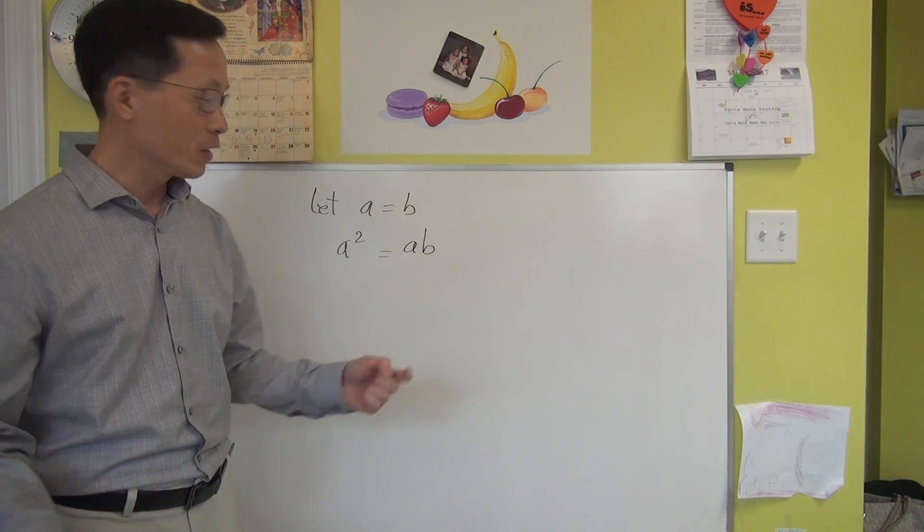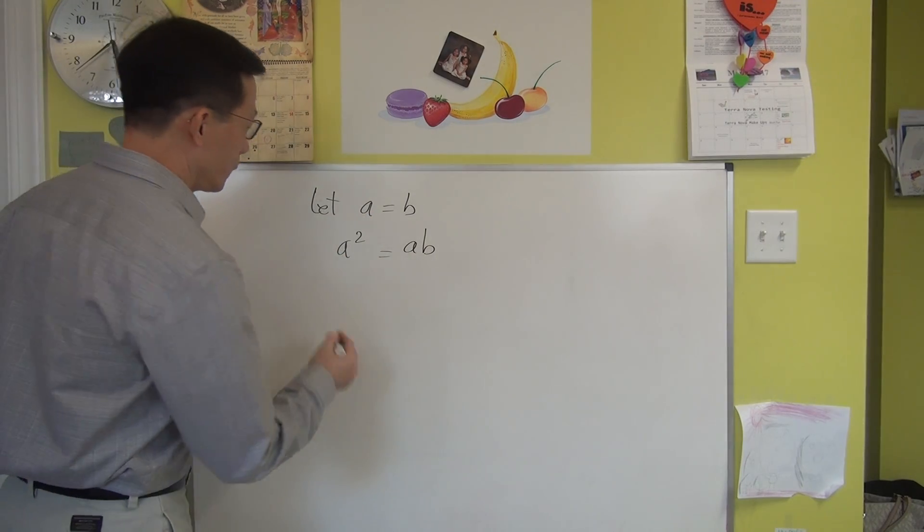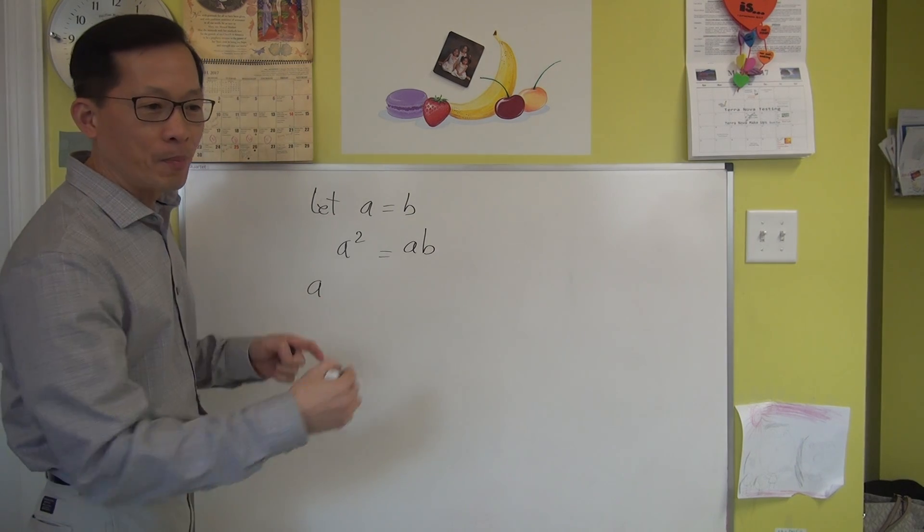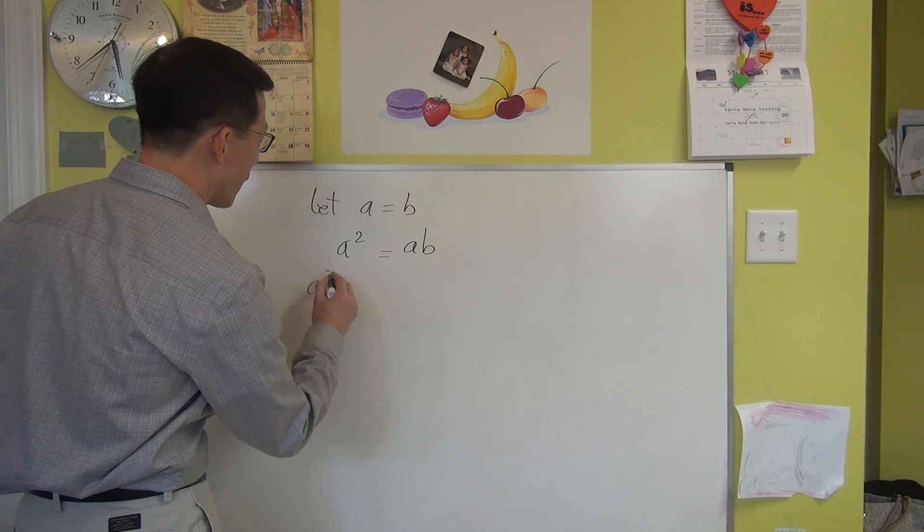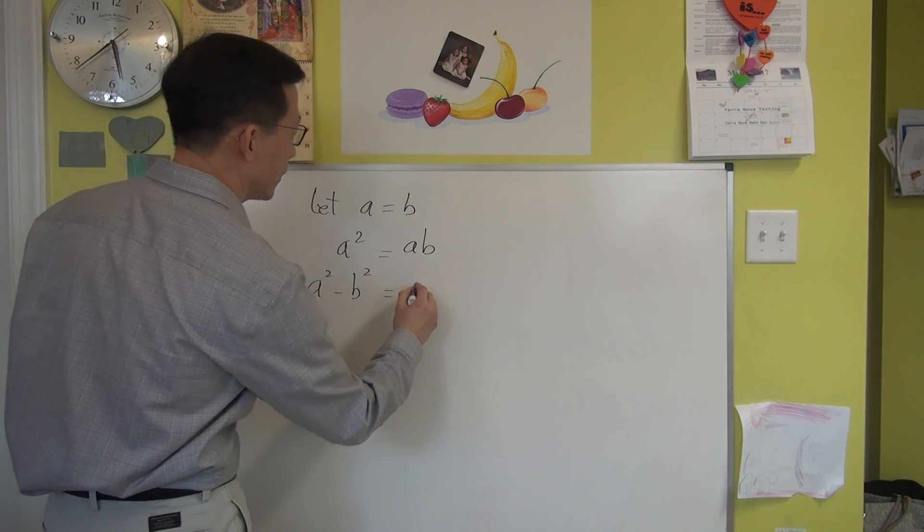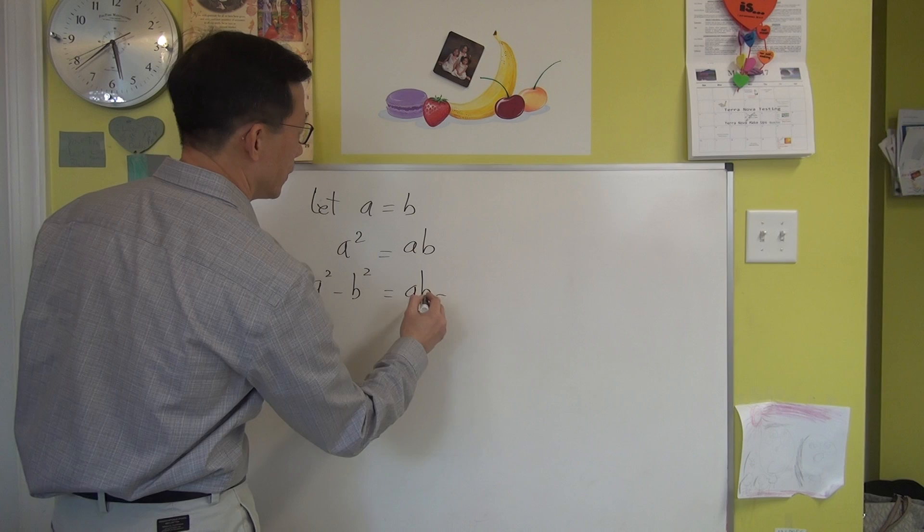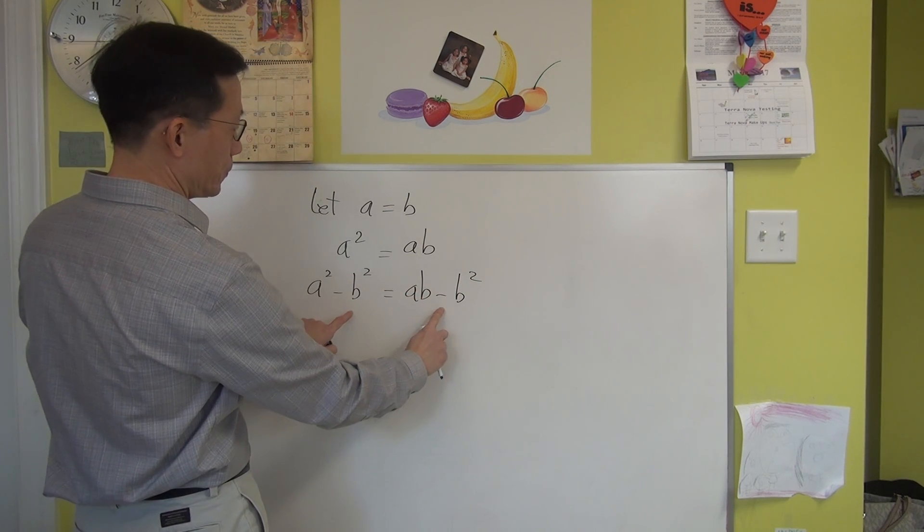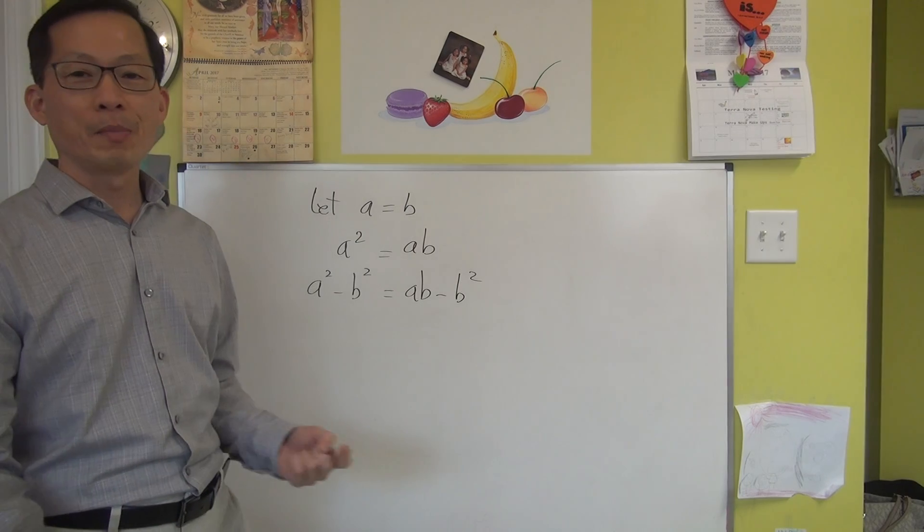Now I'm going to subtract B squared from both sides. So we have A squared minus B squared. And on this side, I do the same thing. So AB minus B squared.